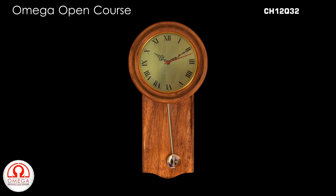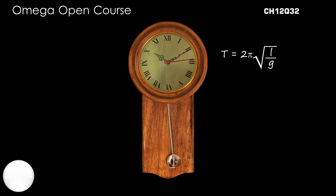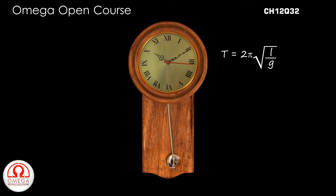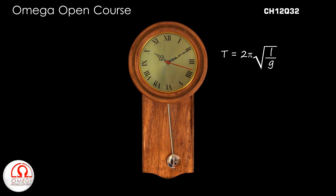The time period of a simple pendulum is given by 2π√(L/g). Since the pendulum is a seconds pendulum, its time period is 2 seconds.